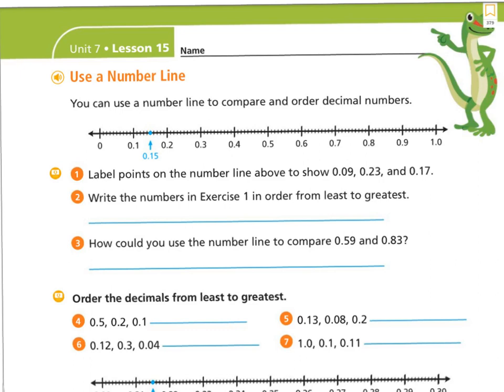Number one says label points on the number line above to show nine hundredths, twenty-three hundredths, and seventeen hundredths. As you can see, they put a little point at fifteen hundredths. If I were to look at nine hundredths, I know that nine hundredths would be right below one tenth. So let's first look at our number line and observe it just a little bit.